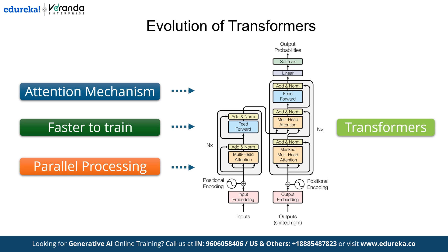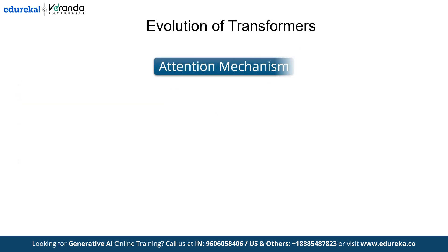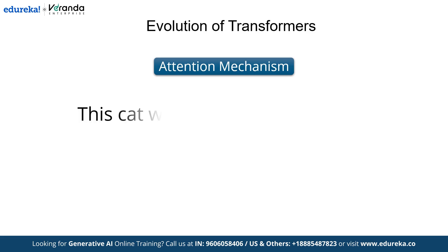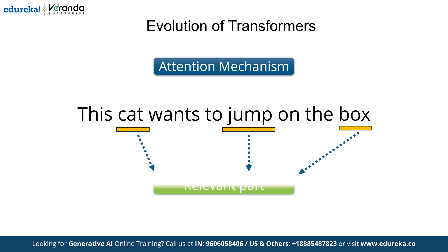Now let's discuss the attention mechanism. Think about this sentence: 'This cat wants to jump on the box.' The attention mechanism identifies the most relevant parts of this sentence — like 'cat,' 'jump,' and 'box' — and focuses on these elements while processing the data.